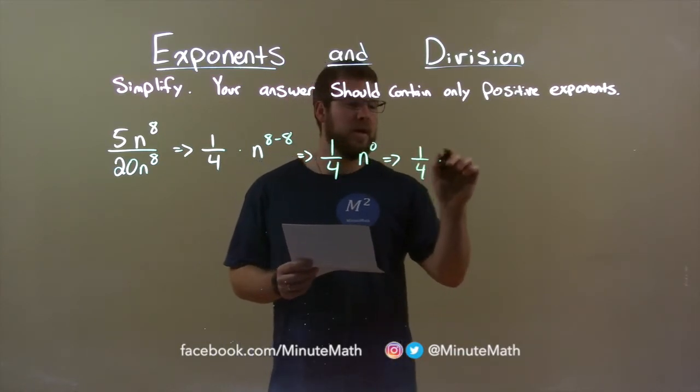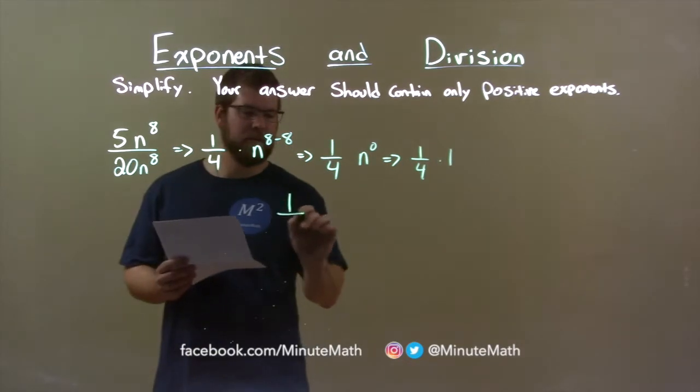So, we have 1 over 4 times 1. So, quickly and easily, my final answer is 1 fourth.